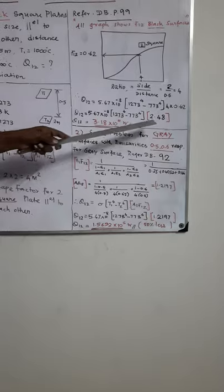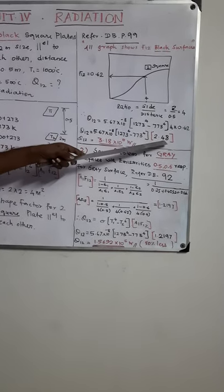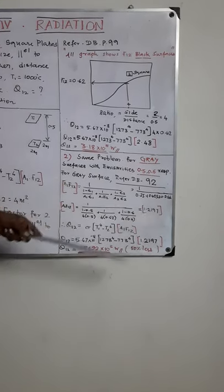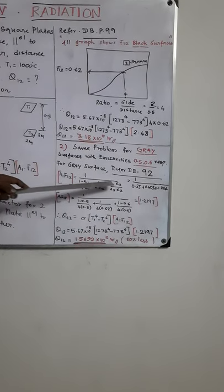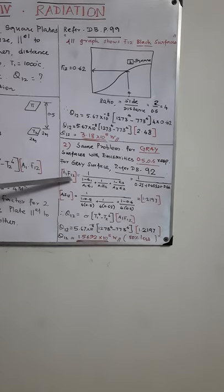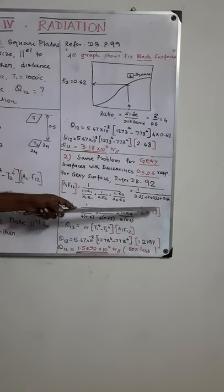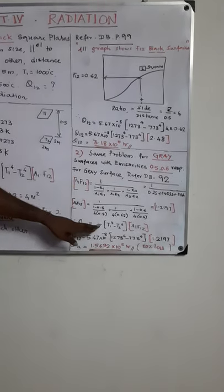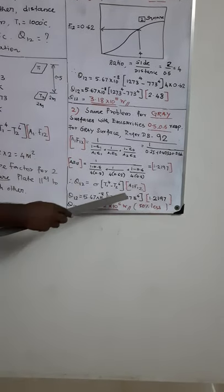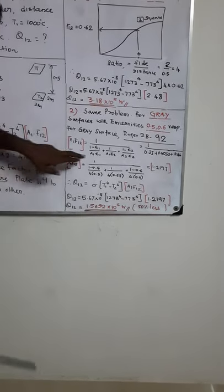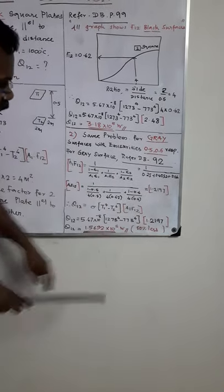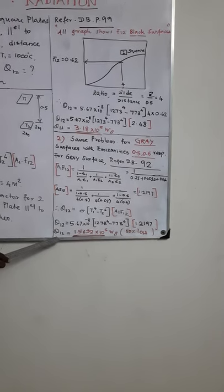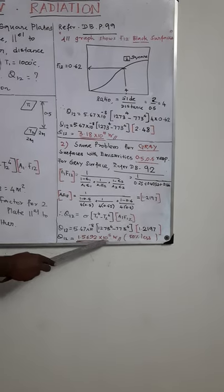If you look at the previous problem, that a1, f1, 2 will be 2.48. Now it is being reduced to nearly 50% value, reduced as 1.2197. Why? Because of the emissivity values. So based on the emissivity value for a gray surface, a1, f1, 2 value getting revised. So if you are substituting this value here, you will get the answer for the second problem. That is, you can use the same problem, sigma, t1 power 4 minus t2 power 4 into a1, f1, 2. But it should be calculated using emissivity value. So as we know that revised value is 1.2197. If you substitute everything, you will get a heat transfer by radiation which is equal to 1.5692 into 10 power 5.